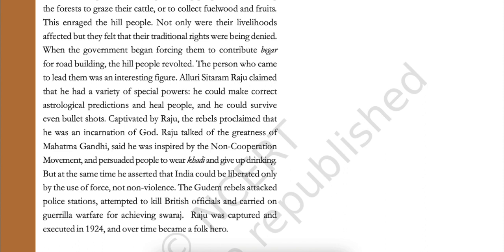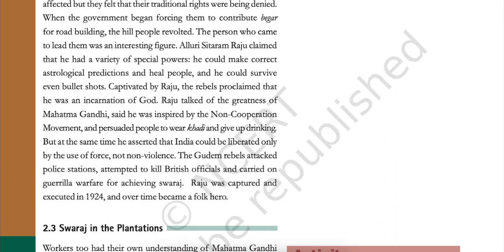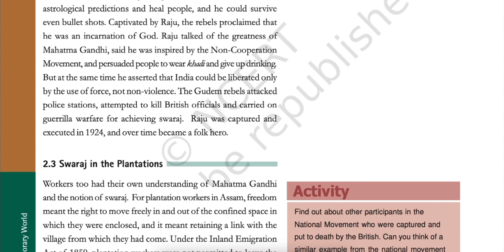The person who came to lead them was an interesting figure. Alluri Sitaram Raju claimed that he had a variety of special powers — he could make correct astrological predictions, heal people, and survive even bullet shots. Captivated by Raju, the rebels proclaimed that he was an incarnation of God. Raju talked of the greatness of Mahatma Gandhi and said he was inspired by the non-cooperation movement and persuaded people to wear khadi and give up drinking. But at the same time, he asserted that India could be liberated only by the use of force, not non-violence. The Gudem rebels attacked police stations, attempted to kill British officials and carried on guerrilla warfare for achieving Swaraj. Raju was captured and executed in 1924 and over time became a folk hero.